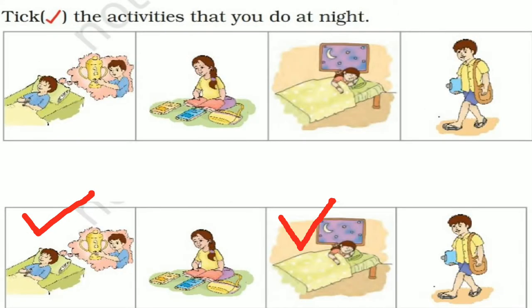Next, tick the activities that you do at night. In the first picture, the boy is dreaming — do you sleep and dream at night? Yes, we all sleep at night, so I have ticked the first picture. In the second picture, a girl is reading. I don't have the habit of reading at night, so I did not tick it — but if you do, you can tick it. In the third picture, a girl is sleeping — we all sleep at night, so I have ticked the third picture. In the fourth picture, a boy is walking with his school bag. We go to school in the morning and come back in the evening, so we do not tick that for nighttime.